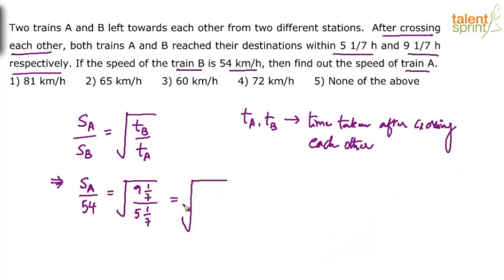Simplify this. What do we get? This will be like root over 64/7 divided by 36/7. So this denominator 7 and 7 gets cancelled, and if you apply that square root, we will get 8/6. So basically speed of train A by 54 kilometers per hour equals 8/6.